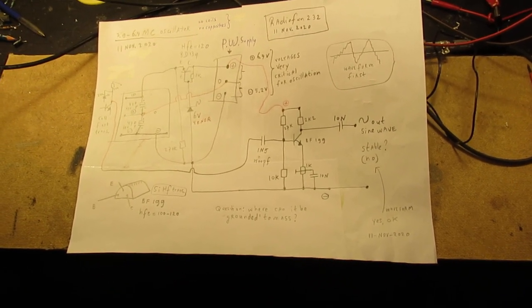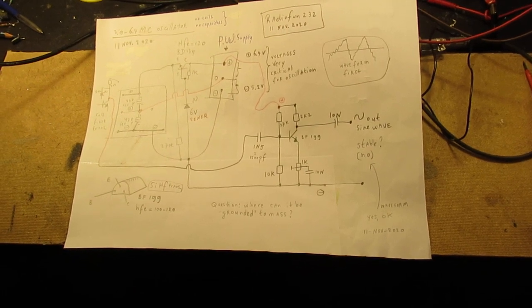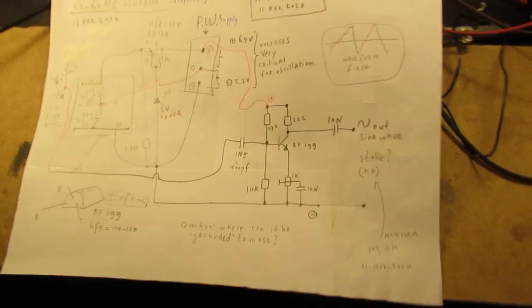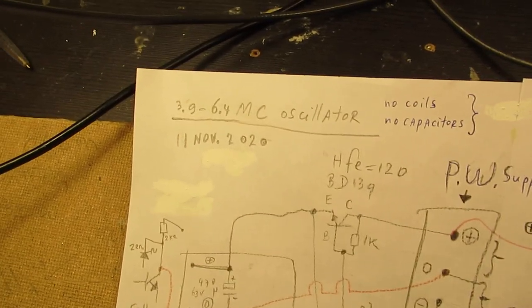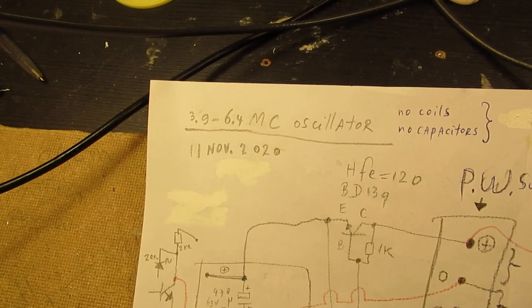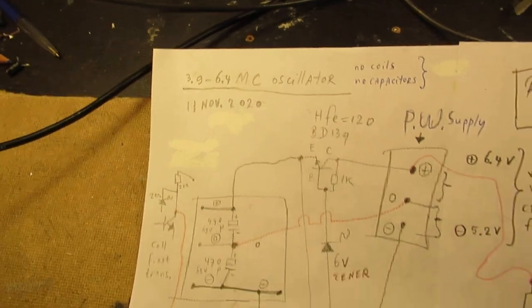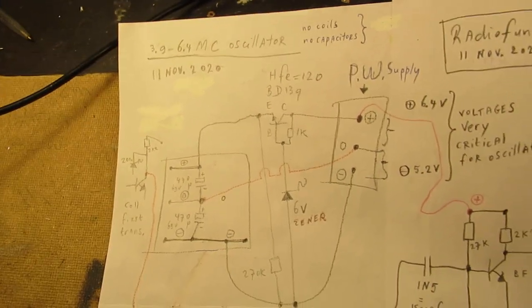Approximately one week ago I made a video about an oscillator that worked between 4 and 7 megahertz. And this is that circuit.